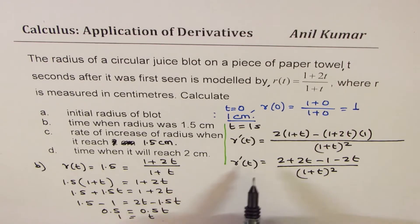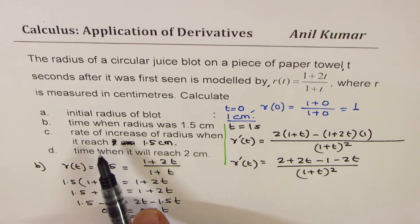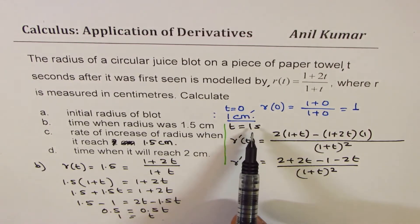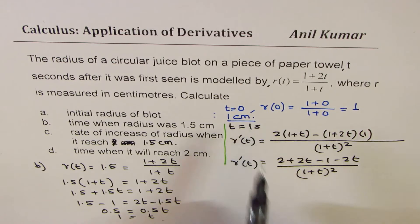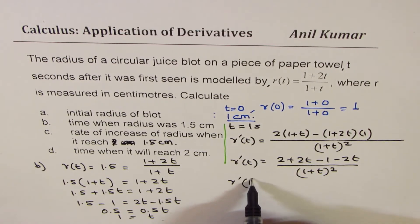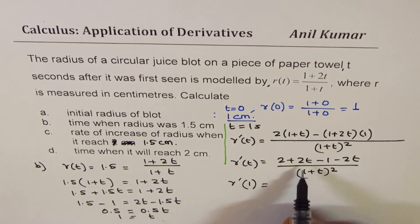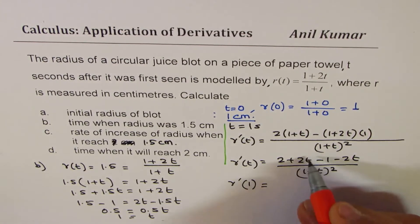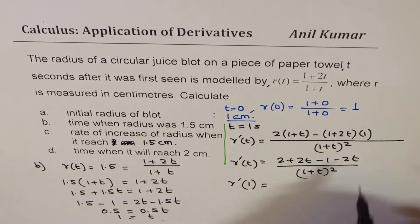We have to find the rate of change when the radius is 1.5, and we know the time is 1 second when the radius is 1.5. So basically we want to find the rate of change when t = 1.